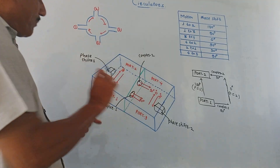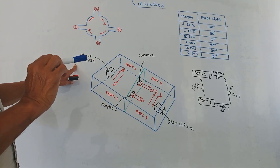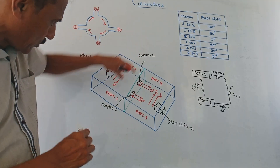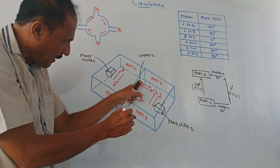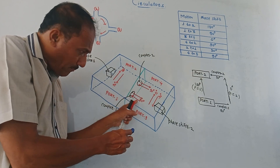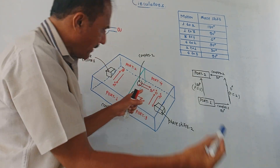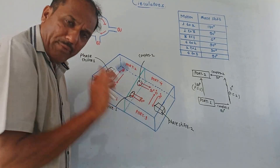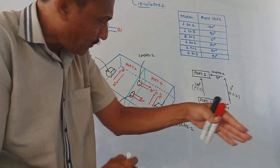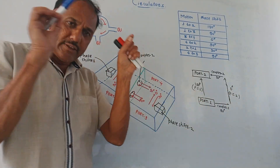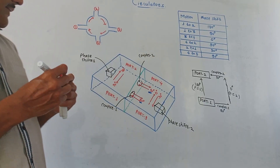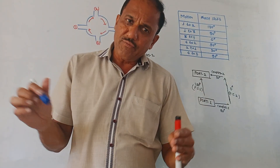This is the constructional diagram of a circulator. We are using four ports: port 1, 2, 3, and 4. Two couplers are used — coupler 1 and coupler 2. Any wave entering or coming out from a coupler obtains a phase shift of 90 degrees. Two phase shifters are also used. These phase shifters are non-reciprocal, meaning there will be a different phase shift for the forward direction and the backward direction.